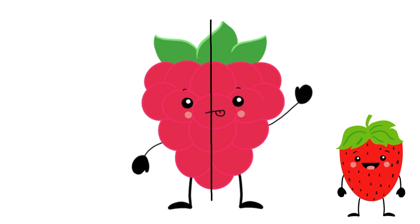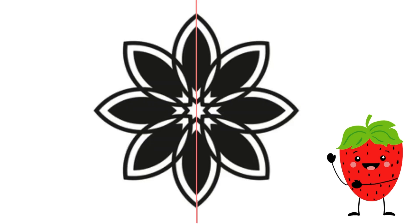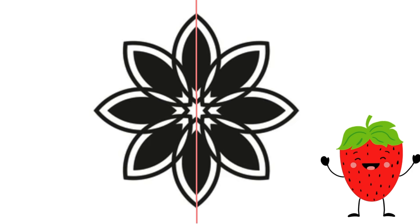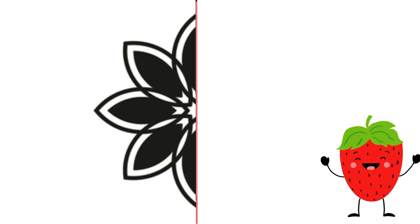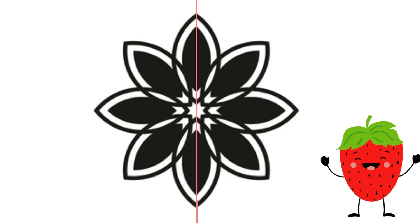If we folded him like a piece of paper down the middle line, the sides would not match up perfectly. Let's try this one — with the line down the middle, is this shape asymmetrical or symmetrical? It's symmetrical! If I take away half of it, we can see that they are the same on both sides.